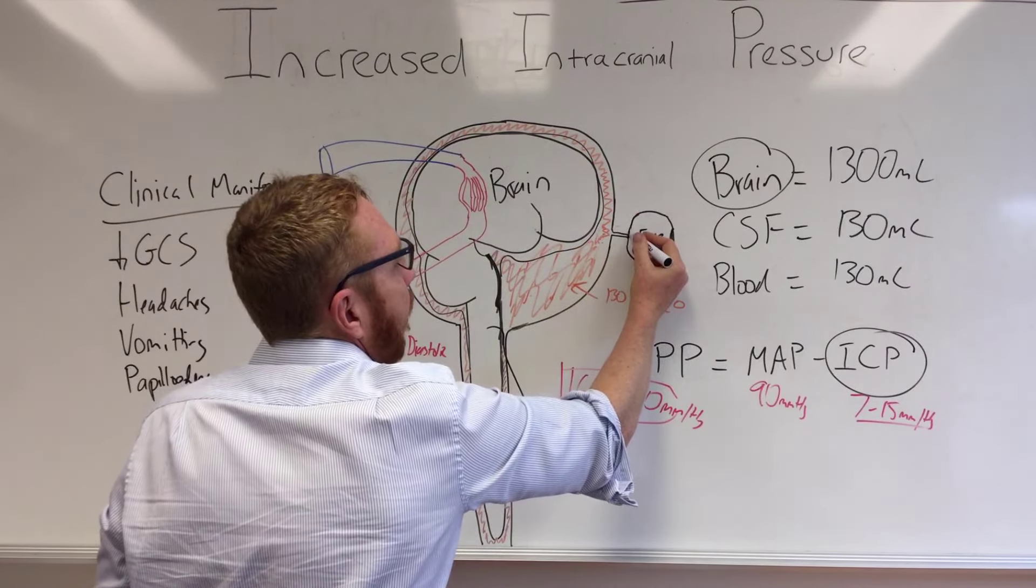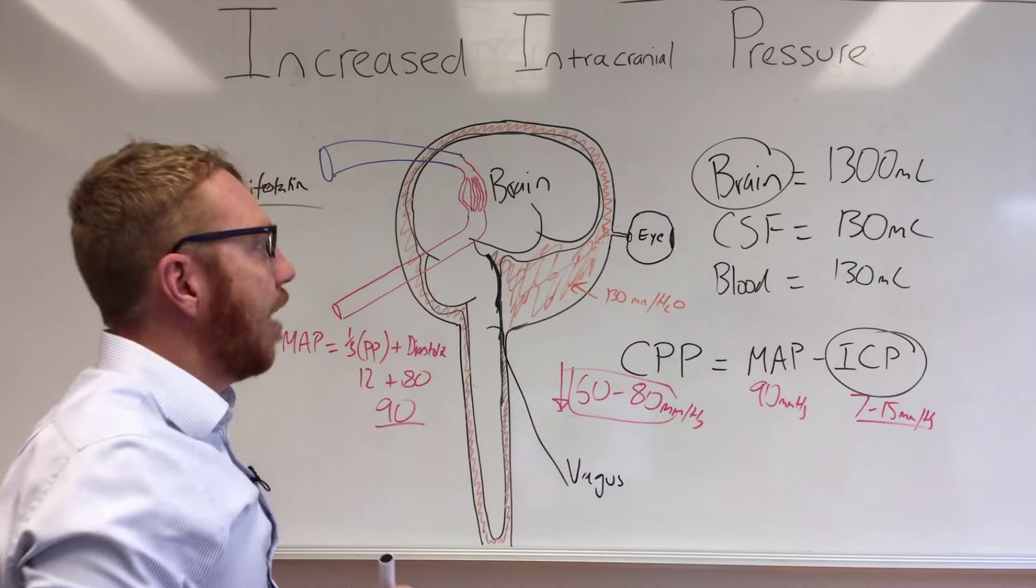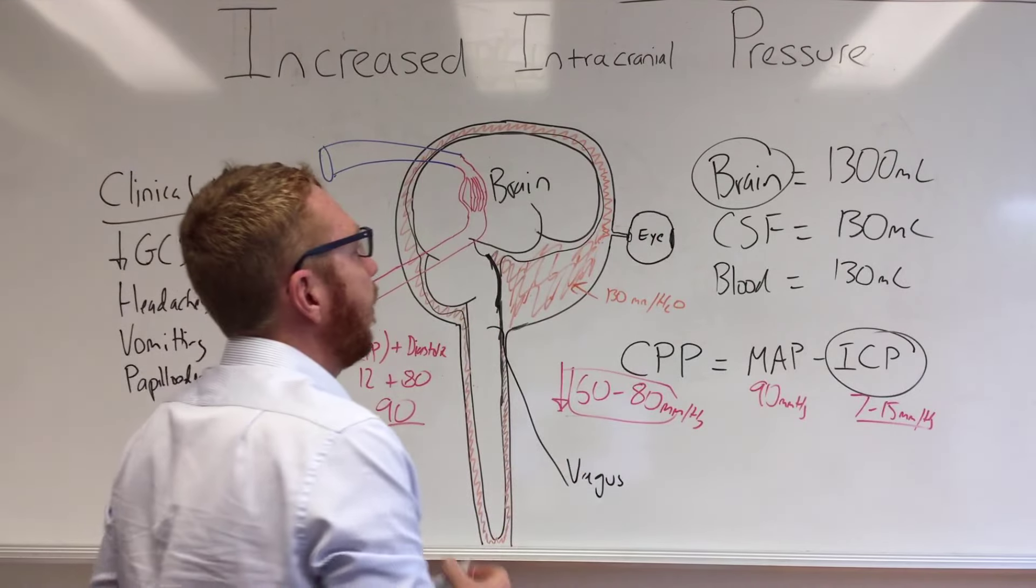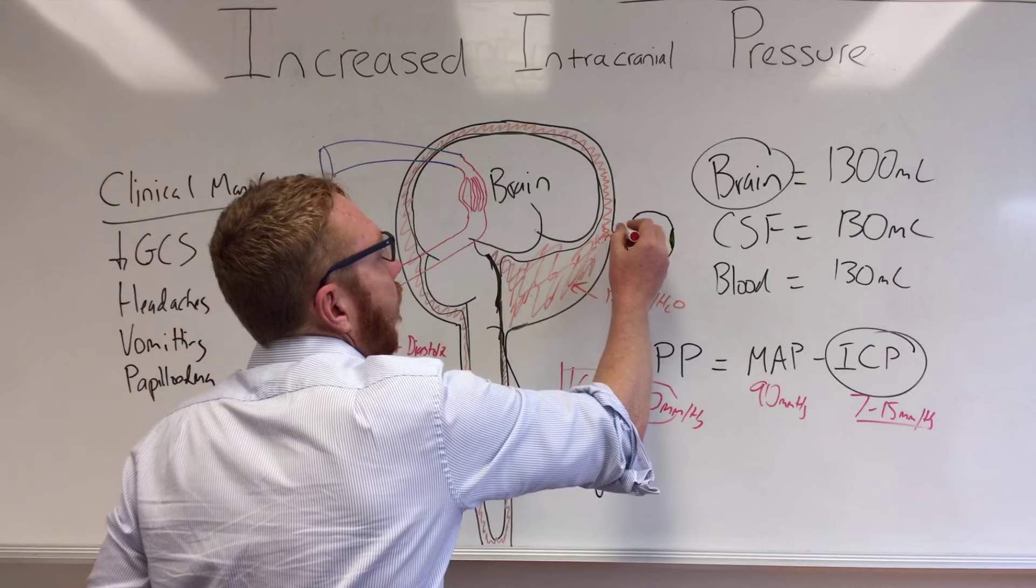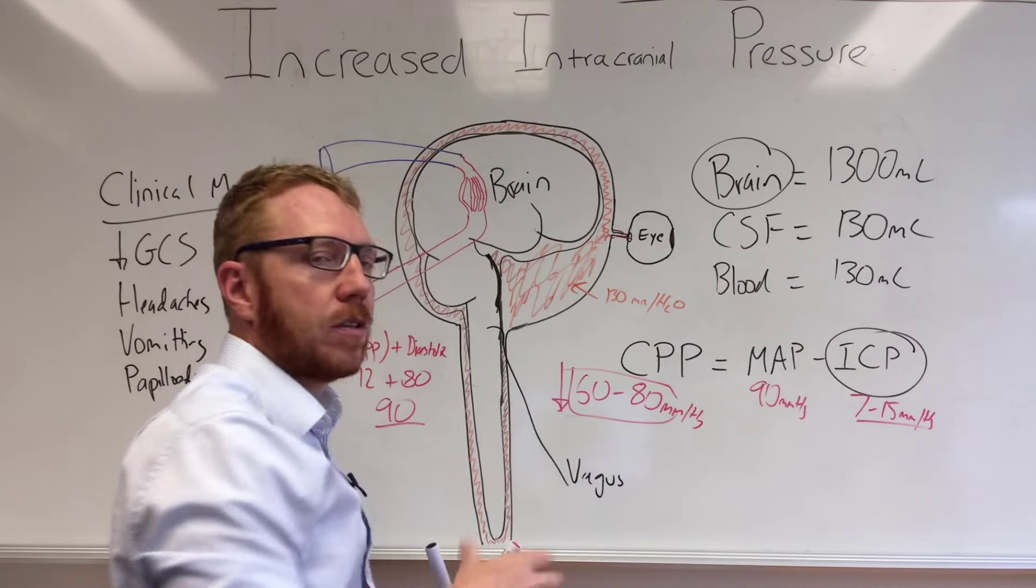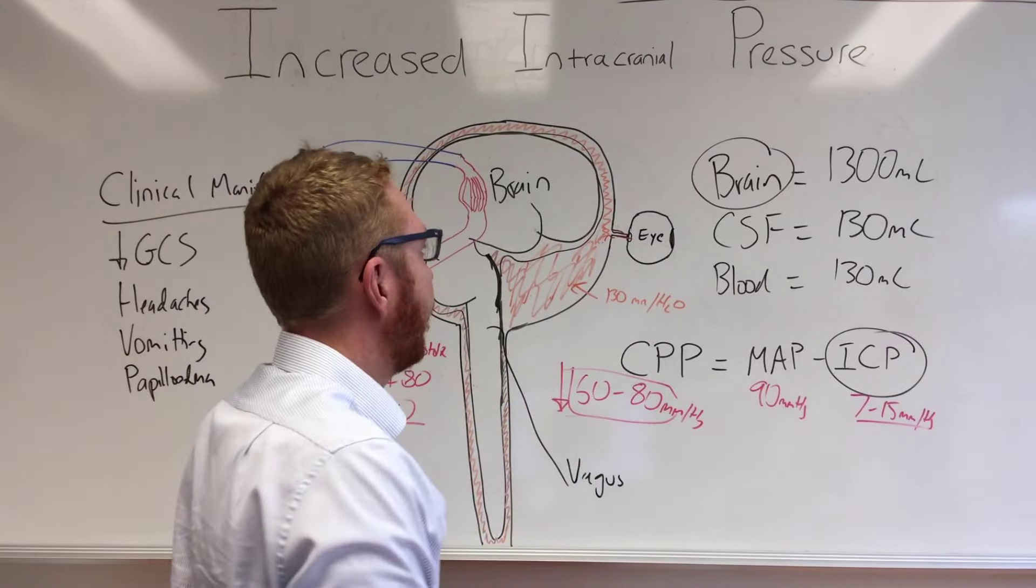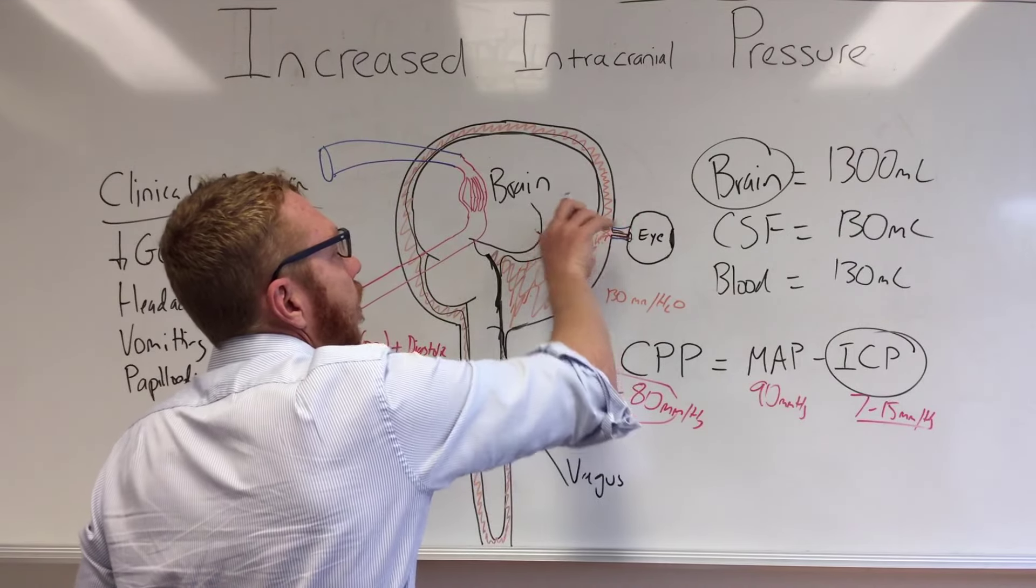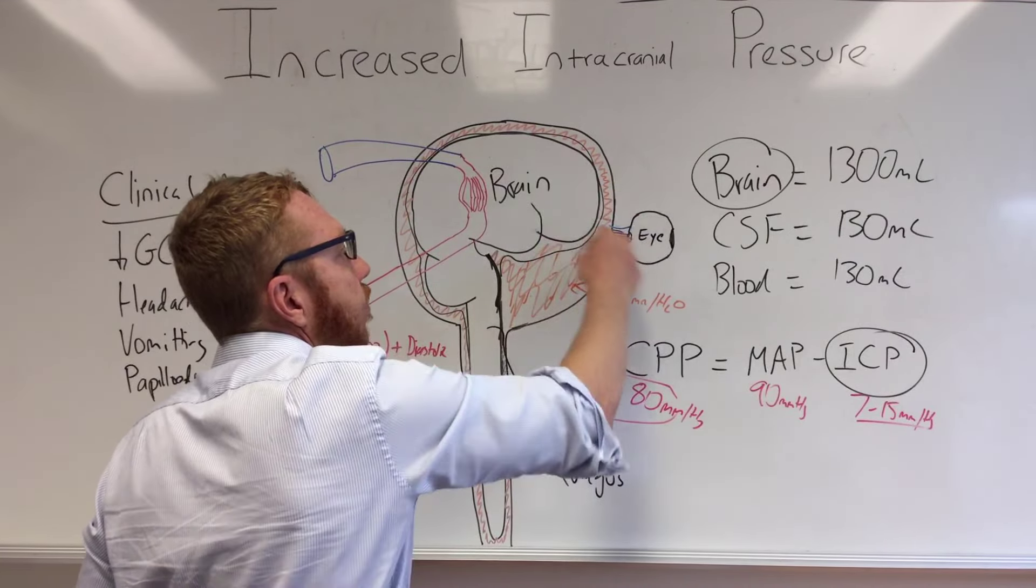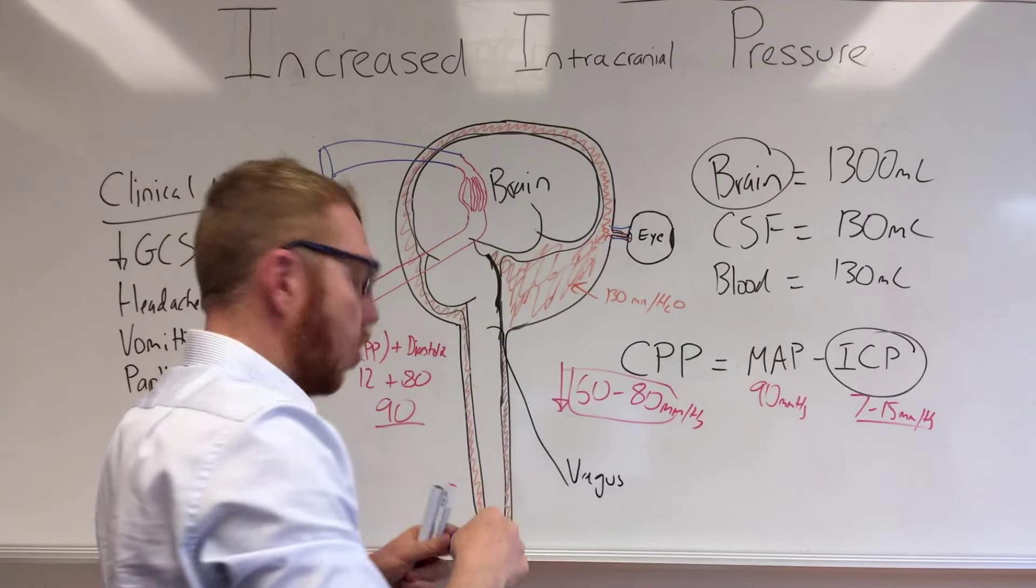Optic nerve coming from the cerebrum, coming into the back of the eye, and there we've got the optic disc. As the ICP increases, the arterial blood flow to the eye appears to be okay because arterial is higher. But venous drainage is a problem because the ICP is increasing, so the venous drainage isn't draining.